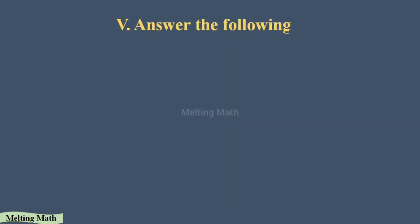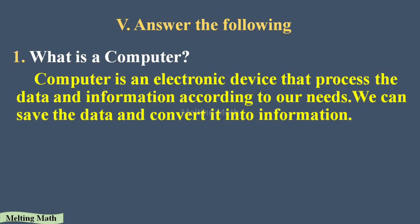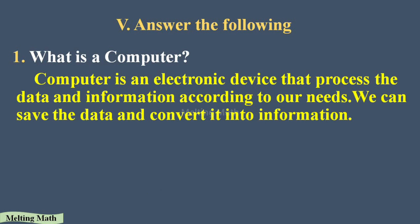Part E: Answer the following. First: what is a computer? A computer is an electronic device that processes data and information according to our needs. We can save data and convert it into information. Data is unprocessed information, and information is processed data.